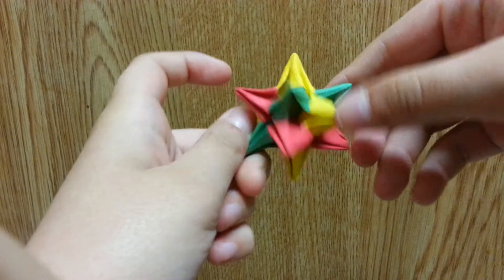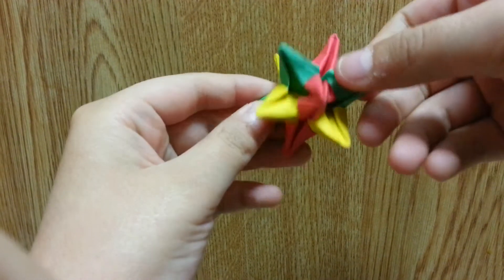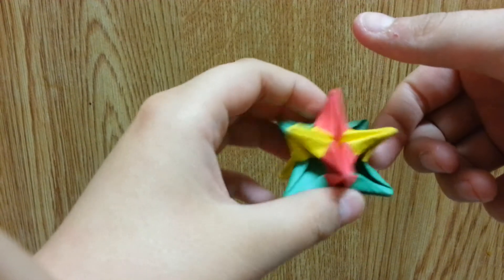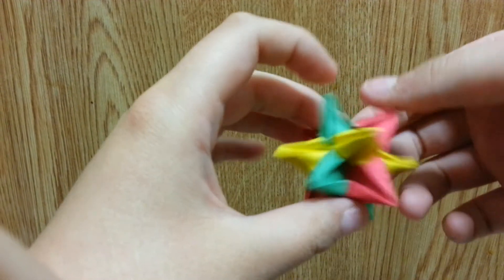And yes, here's the Omega Star. I used green, red, and yellow. It may look like it's actually 12 units.